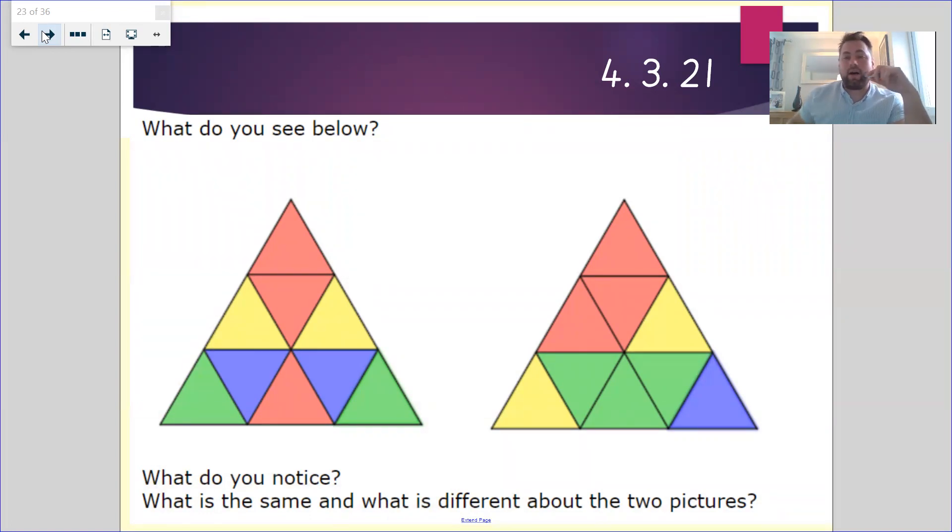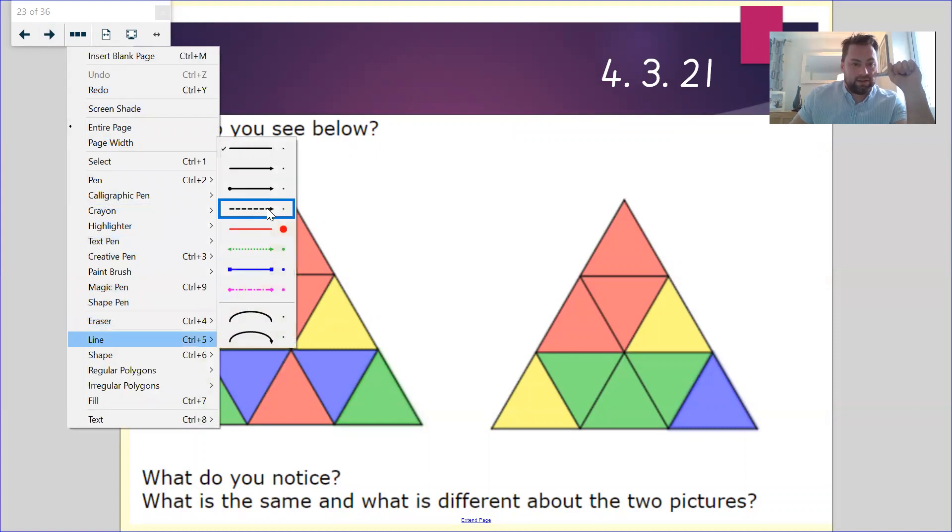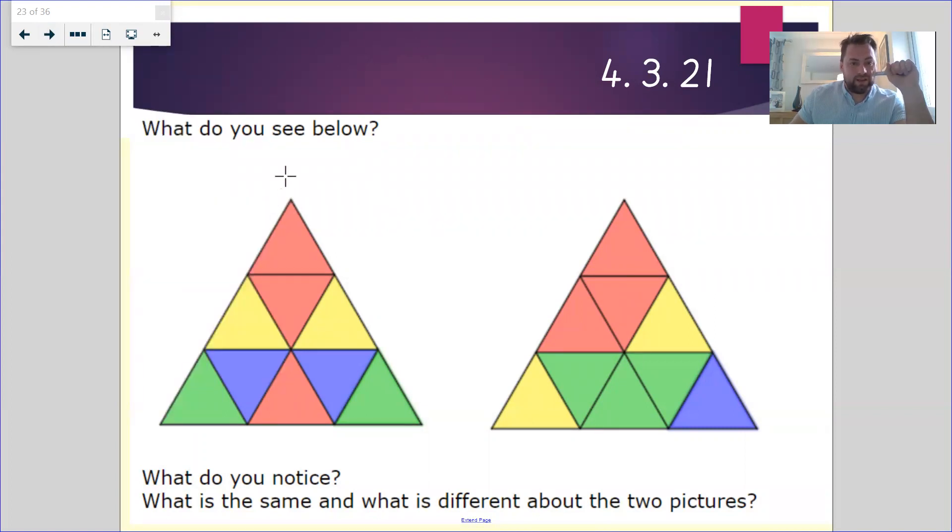So have a think about it. Hopefully you should see that this triangle on this side over here. This triangle here, if we were to draw a line down the middle, the colors on this side are exactly the same on this side, aren't they? So this has got a line of symmetry going down the middle.